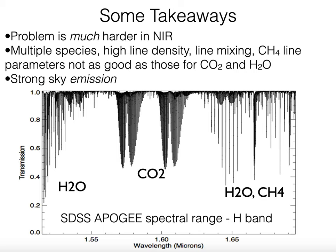The problem is much harder in the near-infrared. Here is a portion of the SDSS-APOGEE spectral range, and you can see absorption from water, CO2, and methane, which all overlap. The CO2 lines are packed very densely together with complicated line mixing. Unlike for water, for methane and CO2 the line lists in HITRAN are not necessarily as good, plus you have strong sky emission. In the near-infrared with multiple species, high line density, and complicated line mixing, this is a fundamentally more difficult problem.